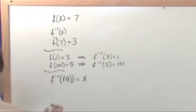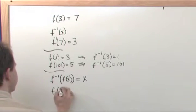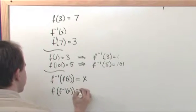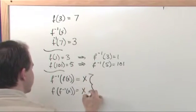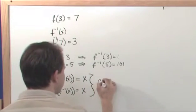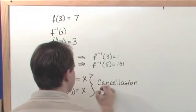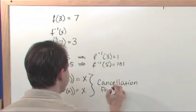And f of the inverse function is also equal to x. And these things right here are called the cancellation properties of inverses.